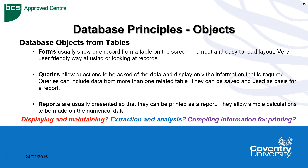The final object is reports, which are generally used so that information can be printed in a format that people understand easily — neat and tidy. Reports can be used to compile information for printing at meetings for people who don't want to see all of the data, just what they're interested in, presented in an easily understood manner. So the ECDL way of looking at the reports object is that it is for compiling information for printing.